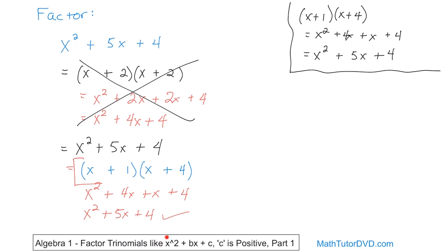So when we factor a trinomial of this form, we come up with two binomials such that when multiplied together we get what we started with. The recipe is the same for all of them: write the first terms that multiply to give the leading term, then write last terms that multiply to give the constant. But you have lots of choices for last terms, so you must also check that the inside and outside terms add up to the correct middle term. For these lessons, c is always positive.